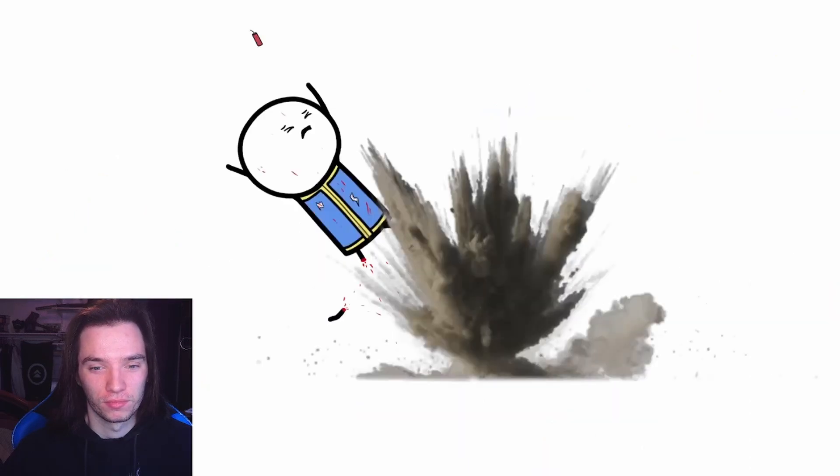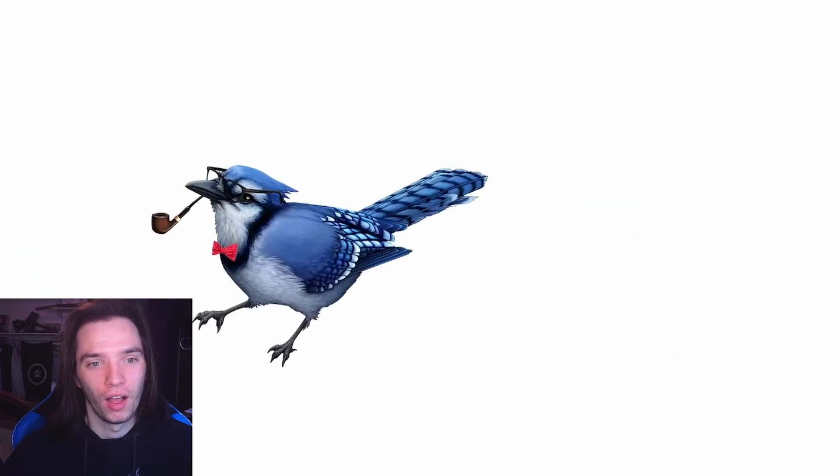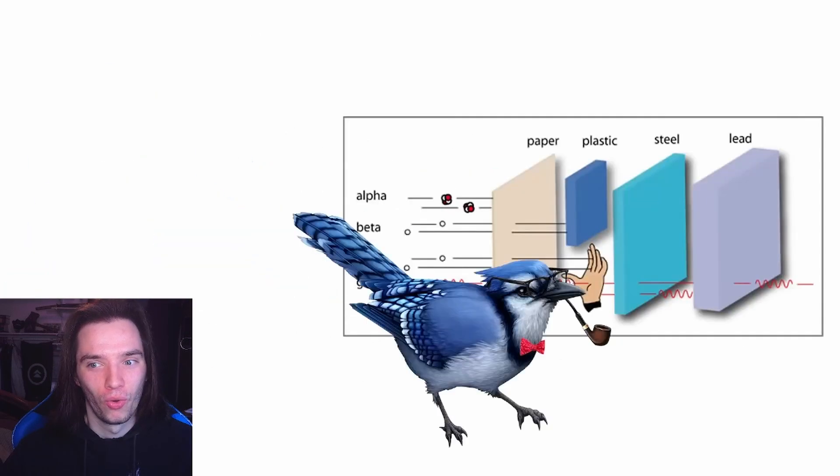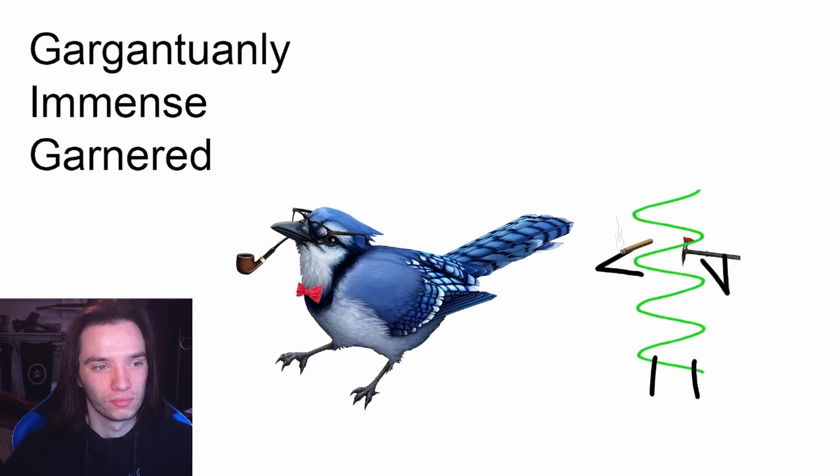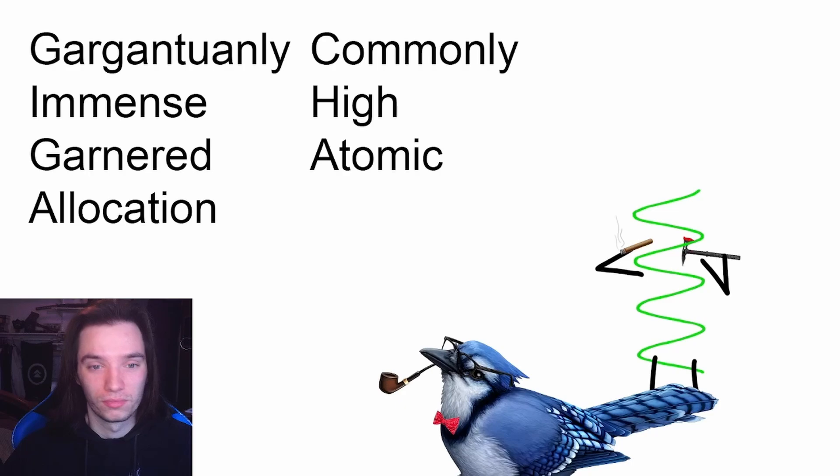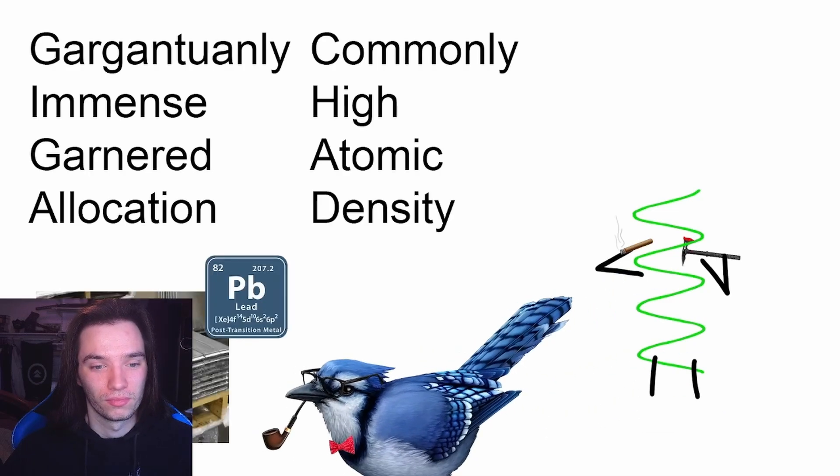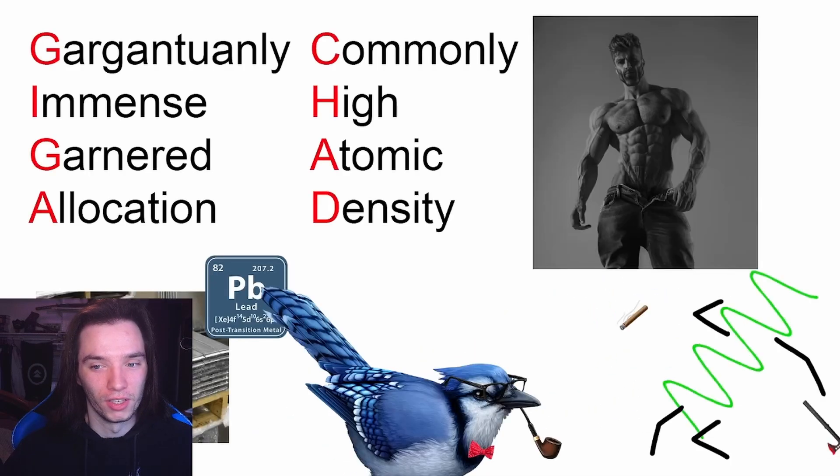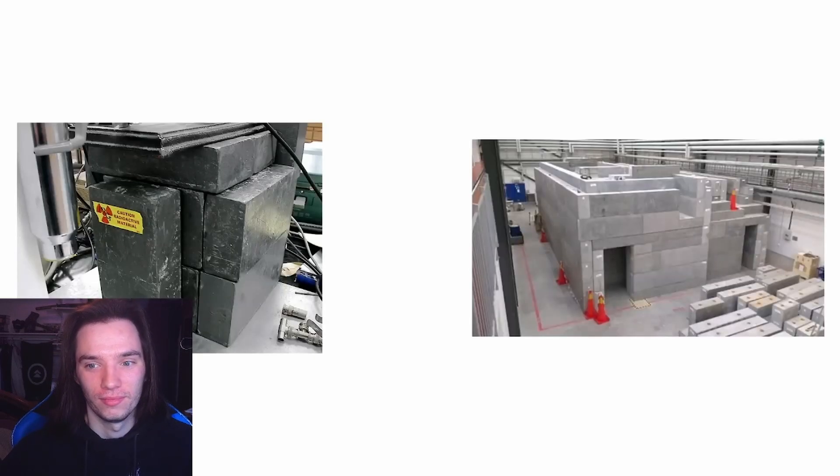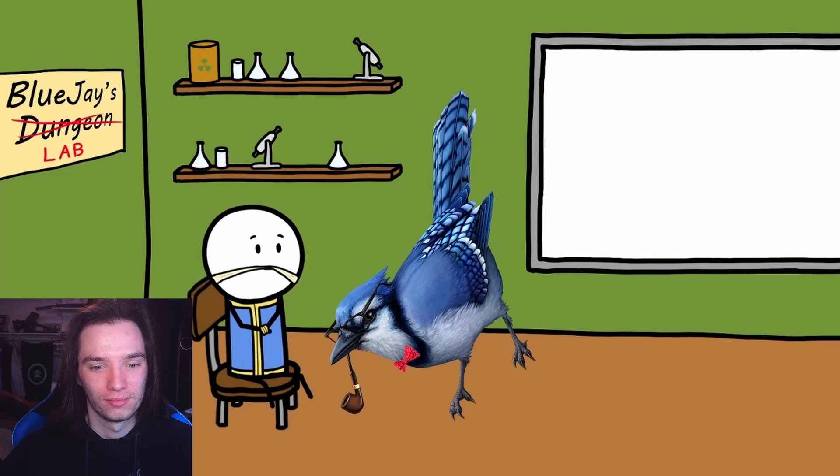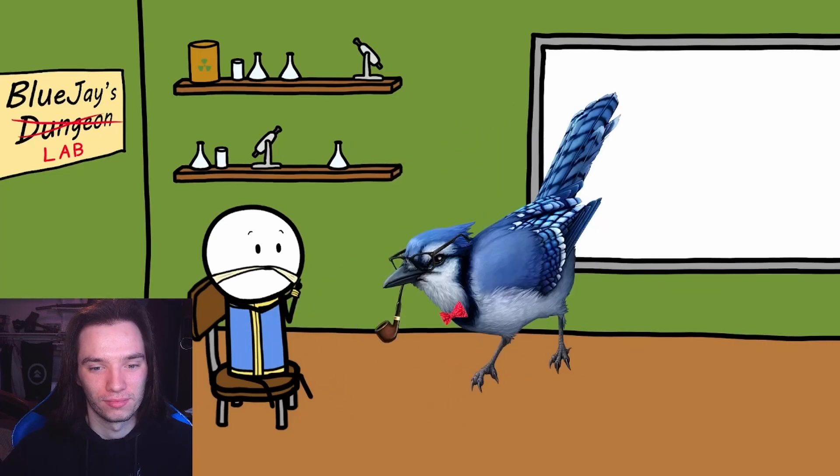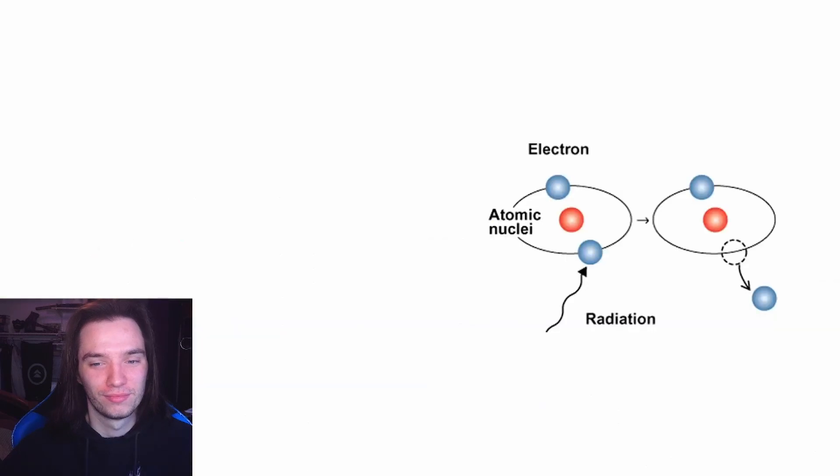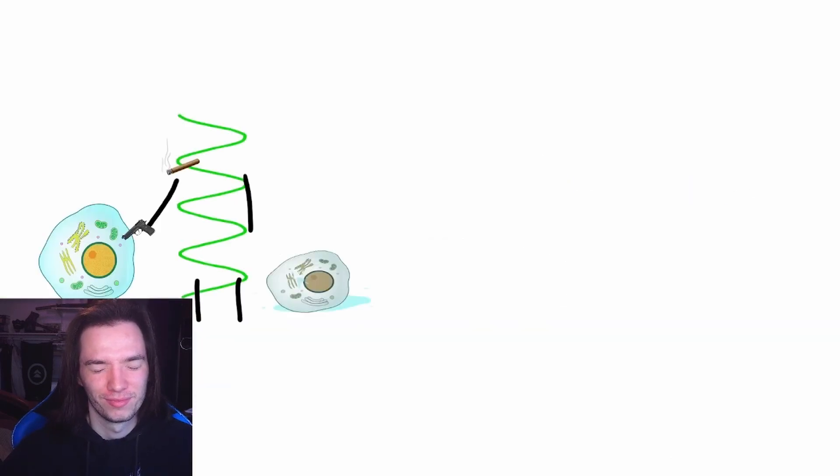Backed by all that energy, gamma rays are the most penetrating form of radiation out there, so much so that it takes a gargantuanly immense, garnered allocation of commonly high atomic density material to stop it, or a giga-Chad. It requires several inches of lead or a few feet of concrete to stop gamma rays, meaning that pathetic sack of meat you call a body doesn't stand a chance, no matter how much creatine you eat.